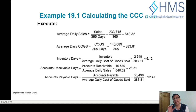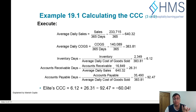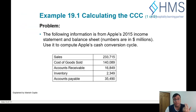The results are: Inventory Days = 6.12 days, Accounts Receivable Days = 26.31 days, and Accounts Payable Days = 92 days. I recommend you verify these in your own calculator. The cash conversion cycle is therefore 6 + 26 − 92 = −60.04 days. This negative value signifies that Apple has not invested any money into its working capital — it is effectively being financed by its suppliers.